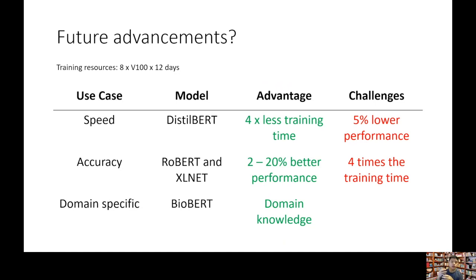BERT also has domain-specific implementations — for example, BioBERT for biological text and understanding words used in that sort of literature. As we can see, there are many advancements. These are very powerful neural networks and models for use cases like customer support or question answering, but they do take a lot of resources — a consideration when deciding whether these models are right for you. This is still a widely developing space, and we continue to look forward to new developments.